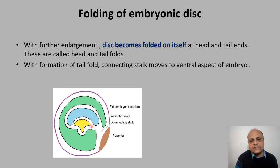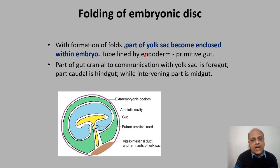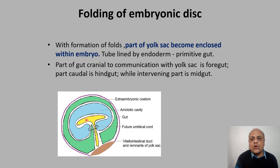Instead of head and tail ends, we now have a head fold and tail fold. With the formation of the tail fold, the connecting stalk moves to the ventral aspect of the embryo. As folding continues, part of the yolk sac becomes enclosed within the embryo, forming a tube — the primitive gut. The part cranial to the communication with the original yolk sac is called the foregut, the part in communication with the yolk sac is the midgut, and the part caudal is the hindgut.